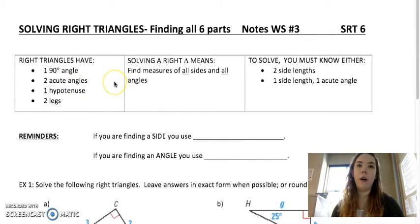So solving a right triangle means you find all three side lengths, all three angles, and the minimum amount of information you need to know is either two side lengths or one side and one acute angle.